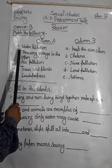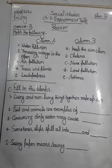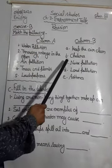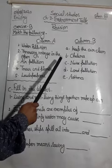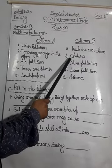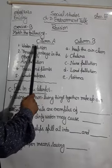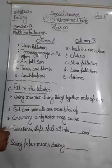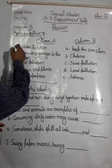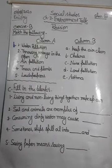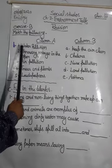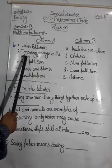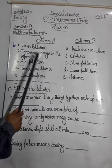First one is water pollution. Cholera is the result of water pollution — it is a water-borne disease. So the answer will be B. Water pollution — cholera.